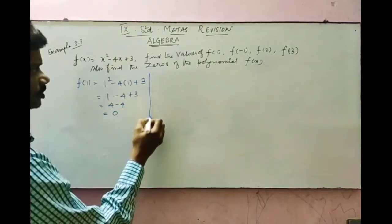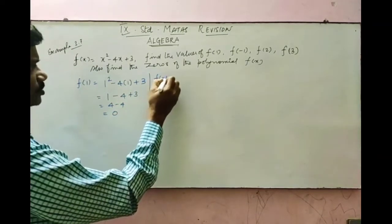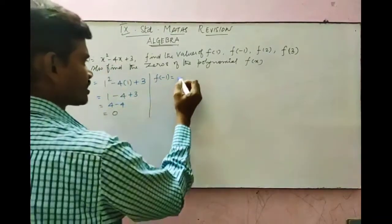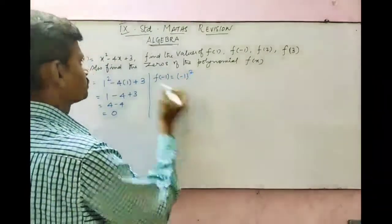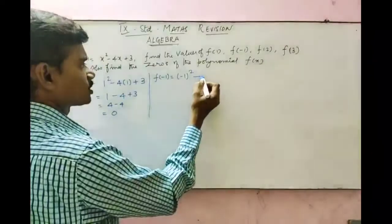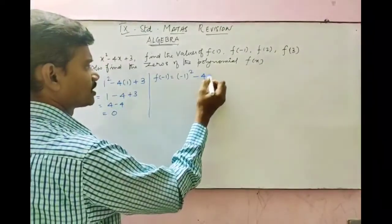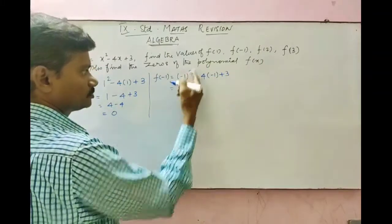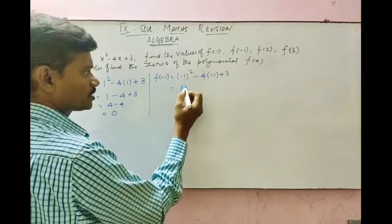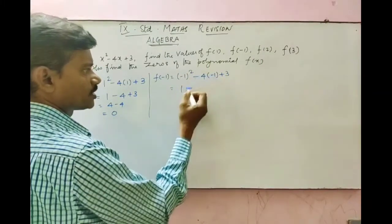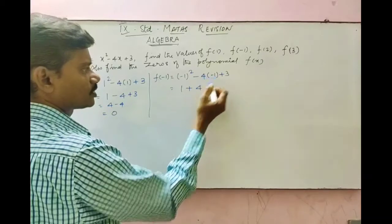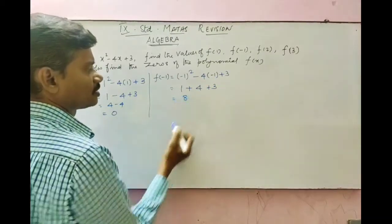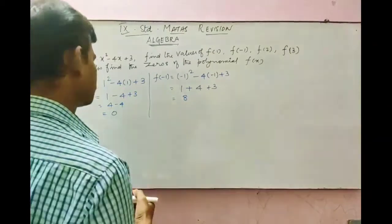Next, find f of minus 1 by substituting x equals minus 1: (minus 1) squared minus 4 times (minus 1) plus 3. Minus 1 squared gives plus 1. Minus times minus becomes plus 4 times 1, so plus 4, plus 3. Adding these three gives 8. So f of minus 1 equals 8.